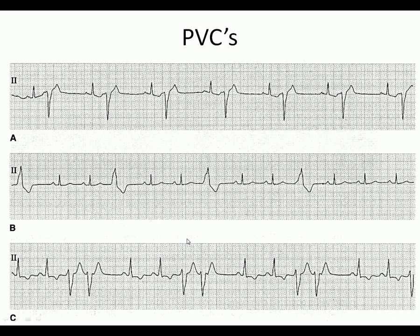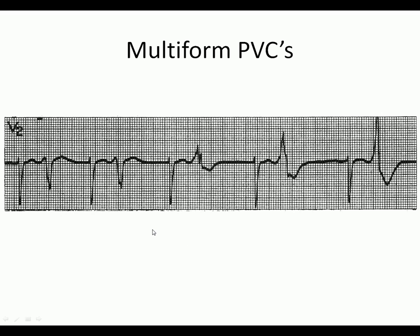Here's what I was talking about with multiform PVCs. We first find our normal QRSs — here's one, here's one, here's one. These are all PVCs. Notice how they all look different — that's not good, because we have multiple areas of the heart spontaneously depolarizing. That usually means there is ischemia in multiple parts of the heart. Multiple PVCs with different morphologies indicate multiple areas of ischemia, which is quite serious.